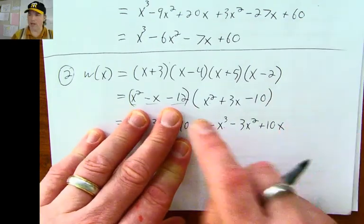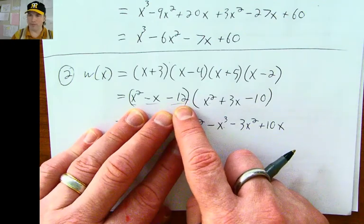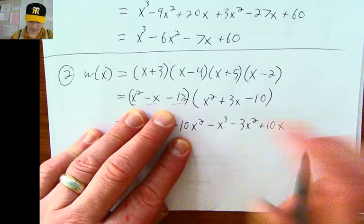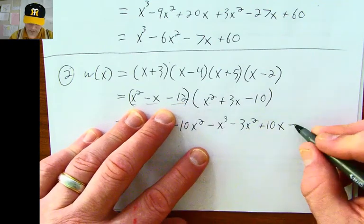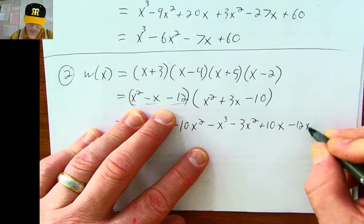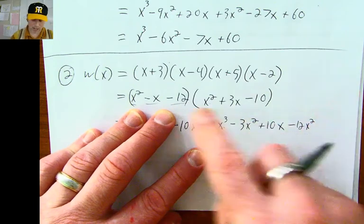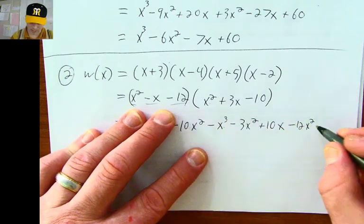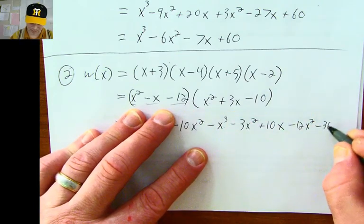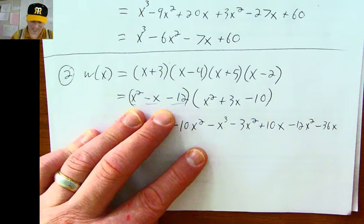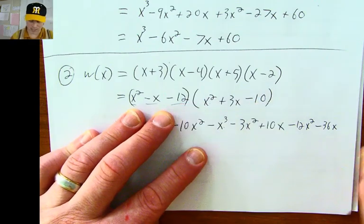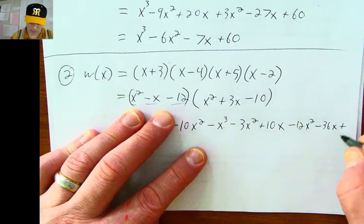Lastly, I'm going to distribute the negative twelve. Negative twelve times x squared is negative 12x squared, negative twelve times positive 3x is negative 36x, and negative twelve times negative ten is positive 120.